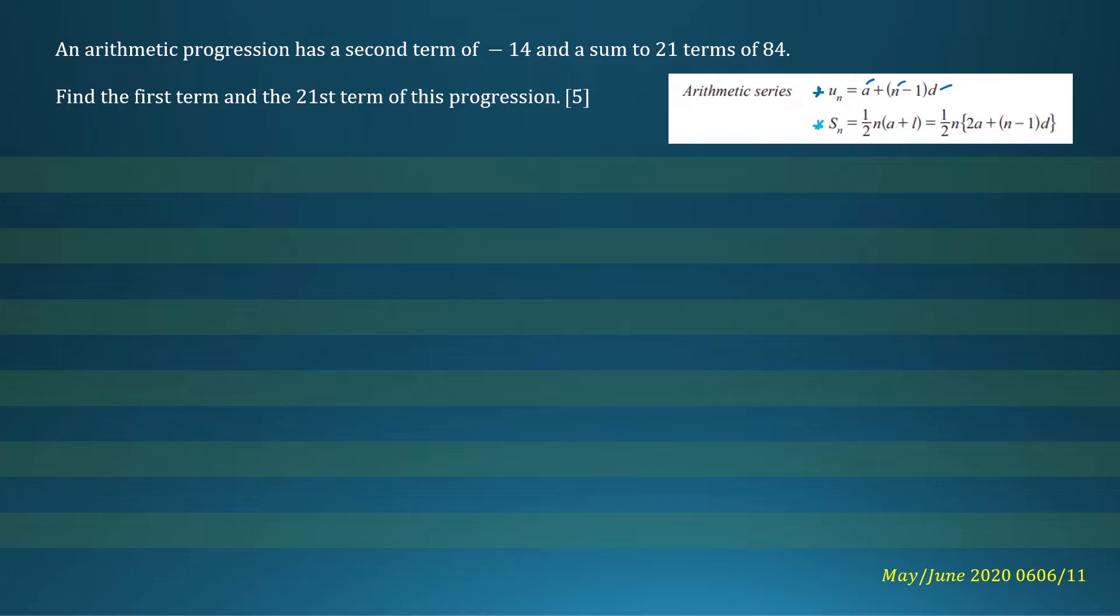The first part of our question says it has a second term of negative 14, so we need our first formula. Let's write it down. We have u_n equals a plus (n minus 1) times d. In our question, n will be equal to 2 and u_2 is equal to negative 14.